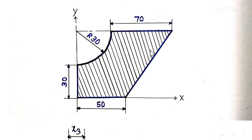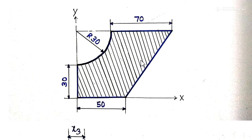If you see this shaded portion, it is a complex shape — we can't find out the centroid of this shaded portion directly. So for that, what we do is we will divide this shaded area into three parts. To get this shaded area, we will make three parts, then remove two of them.